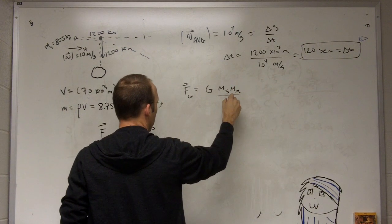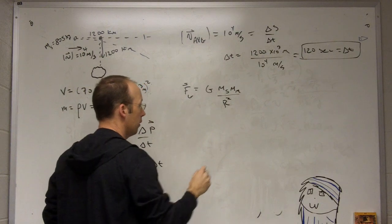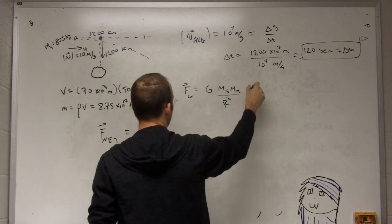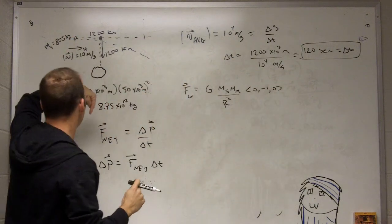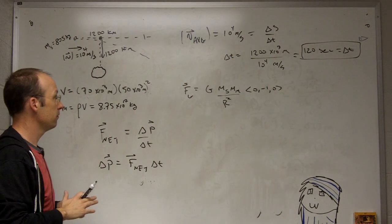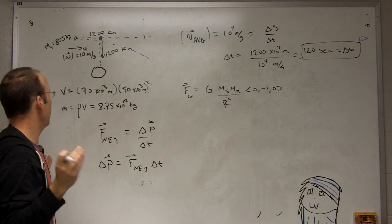And then it's going to be in this case (0, -1, 0), right, because it's going in the negative x direction, but that's not too important here. So I have everything I need right there.